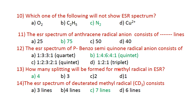Question 12: how many splittings will be formed for the methyl radical in ESR? The neighboring nuclei is 3. Using the formula 2NI+1, where N=3 and I=1/2: 2×(1/2) cancels, giving 3+1 = 4 lines. The answer is 4.